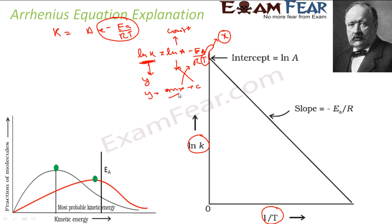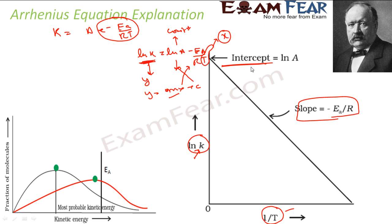This is nothing but a Y equals MX plus C graph, where C is the constant intercept and M is the slope. The slope M is nothing but minus Ea by R. Comparing the two equations — ln K equals ln A minus Ea/RT, and Y equals MX plus C — where Y is ln K and X is 1/T, the slope is minus Ea by R. So a plot of ln K versus 1/T gives a straight line with intercept ln A and slope minus Ea by R.